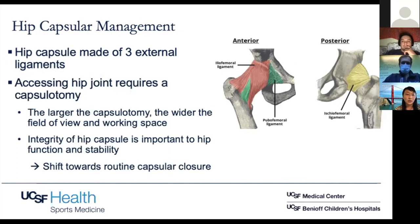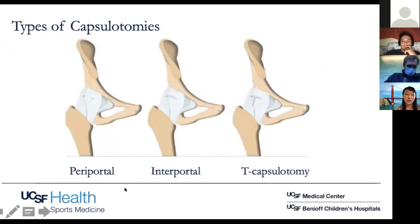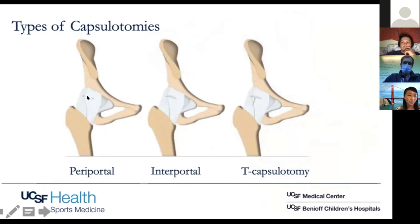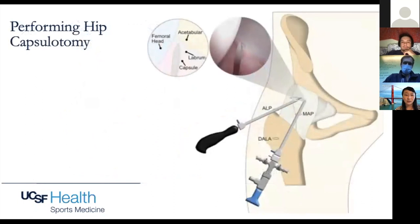There are a couple of different types of capsulotomies. Dr. Zhang uses the periportal capsulotomy — essentially you make the anterolateral portal, make the modified mid-anterior portal, and just work between the two. Another option is the interportal capsulotomy, connecting the two portals and making a transverse cut along the iliofemoral ligament — which is the technique I use. You can also extend the interportal down with a vertical limb, creating a T-capsulotomy, which provides the best exposure for looking at cam lesions but leaves a bigger opening in the capsule.